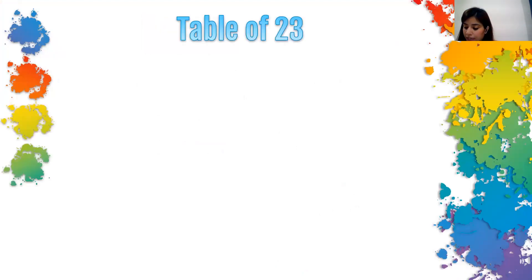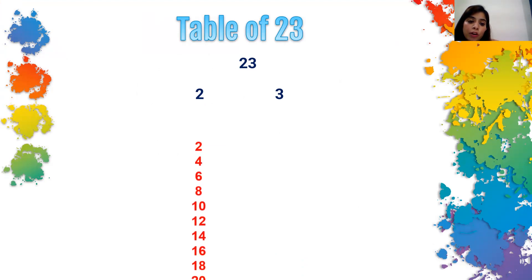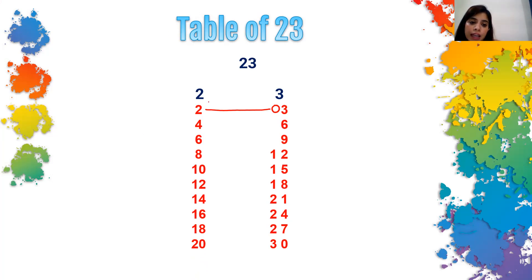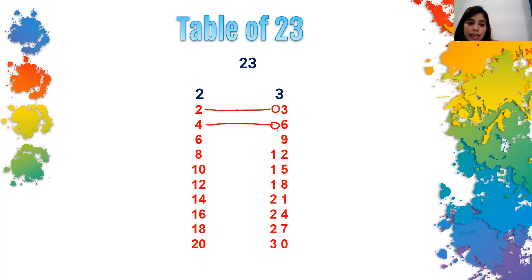Now let's start. Suppose we have to write the table of 23. What we have to do is take the two digits of 23 — that is 2 and 3 — and write the table of 2 on the left-hand side and the table of 3 on the right-hand side. Wherever there are single digits, you can put a zero. Make sure the rows are in line: 2 times 1 and 3 times 1 in line, then 2 times 2 and 3 times 2 in line.